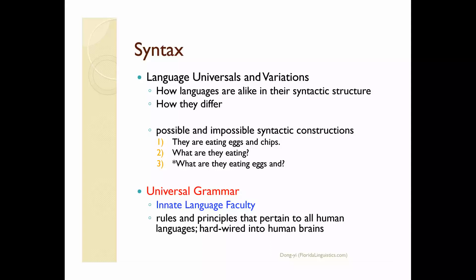One of the primary goals of linguistics is to uncover language universals and variations. Syntacticians are also interested in how languages are alike in their syntactic structure and how they differ. Therefore, an important part of syntactic research is to investigate possible and impossible syntactic constructions or structures across the world's languages.